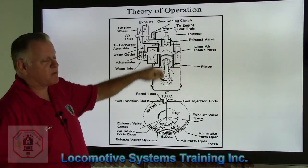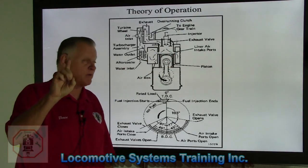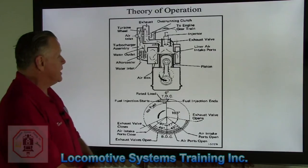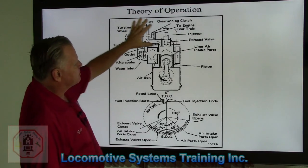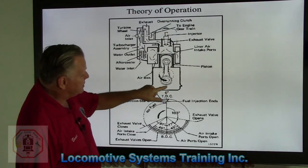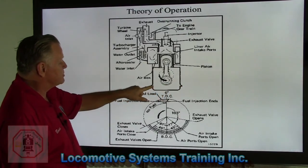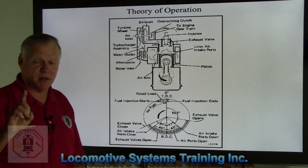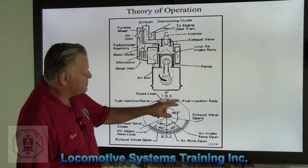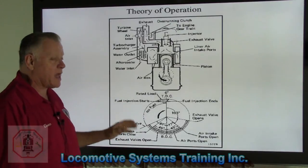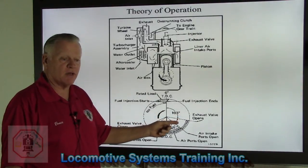The injector fires one time for every crankshaft revolution, and the exhaust valves open and close on each power assembly for every one revolution of that crankshaft. Now let's look at the theory wheel, which tells us what happens inside that engine based on degrees of rotation of the crankshaft.